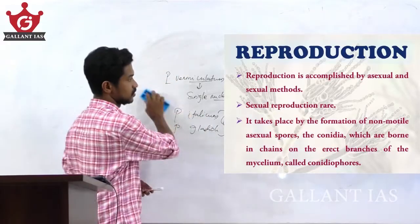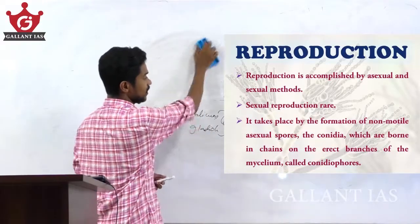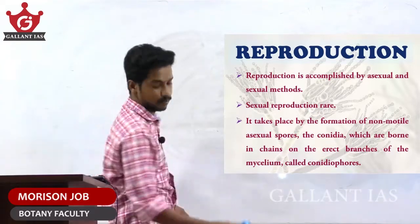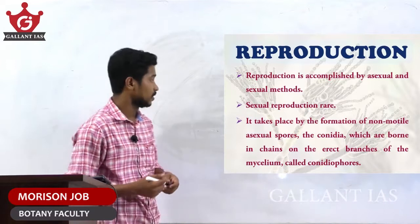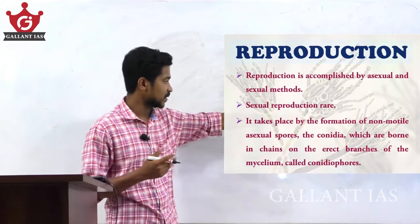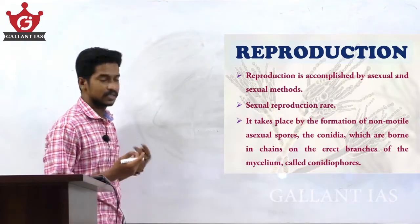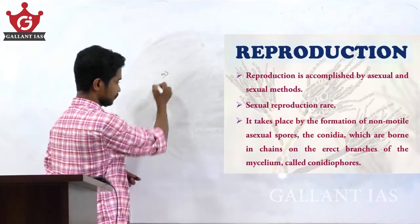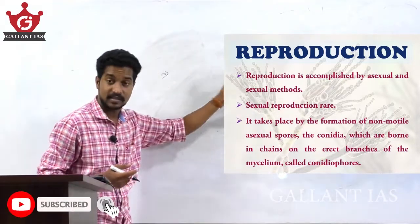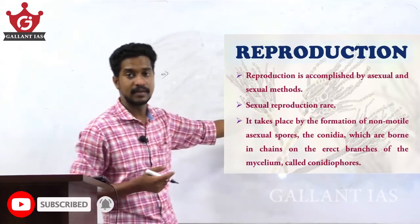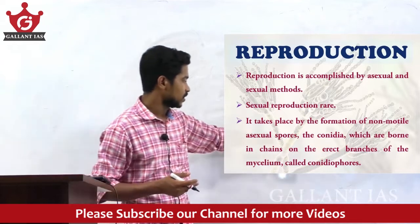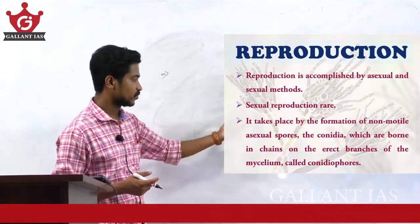Next is reproduction. Reproduction in Penicillium is accomplished by asexual and sexual methods. Sexual reproduction is rare in Penicillium and takes place by the formation of non-motile asexual spores called conidia.